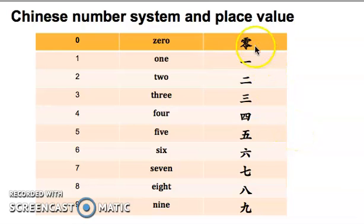Chinese number system starts with 0, 1, 2, 3, 4, 5, 6, 7, 8, 9.